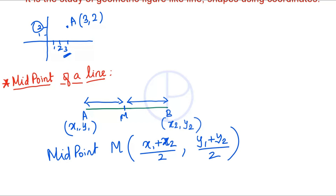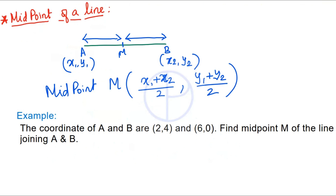Let's look at this example. The coordinates of A and B are (2, 4) and (6, 0). Find the midpoint M of the line joining A and B. We know the midpoint formula which is: M = ( (x1 + x2) / 2 , (y1 + y2) / 2 ).